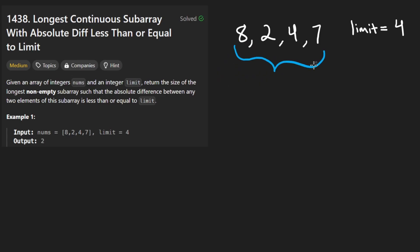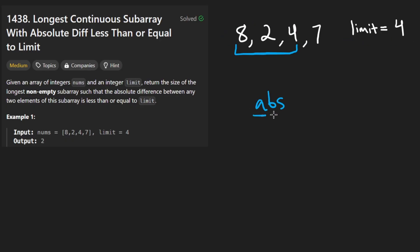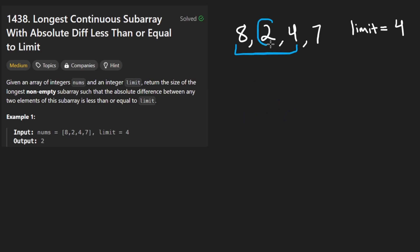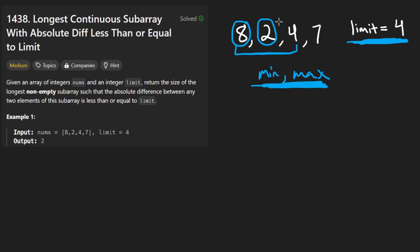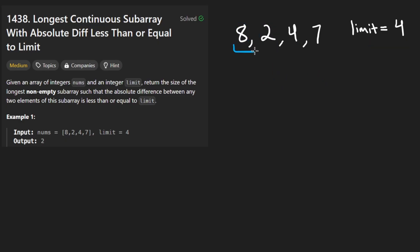The idea is we're given an input array of numbers and some limit, and we want to find the longest subarray where the absolute difference between any two numbers is less than or equal to the limit. That pretty much means the minimum element and the maximum element in the subarray — the difference between those two has to be less than or equal to this. So we need to keep track of the minimum and maximum in each subarray. The brute force would be to look at every single subarray, which is O(n²). So can we do better? Yes, we can.